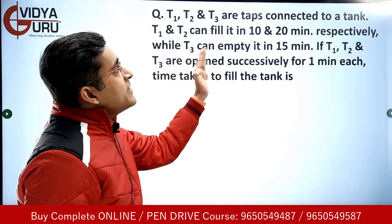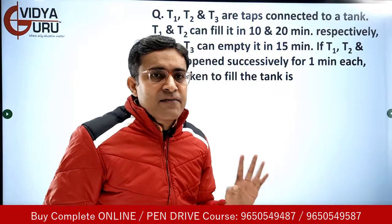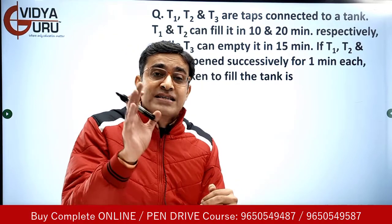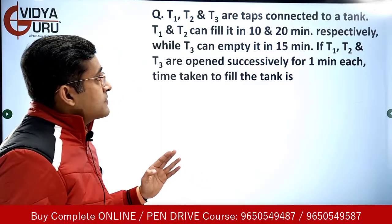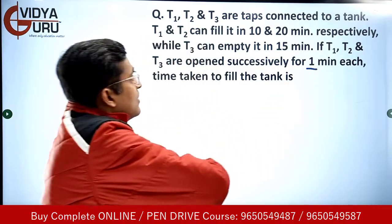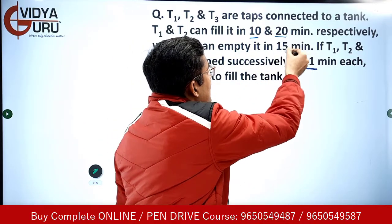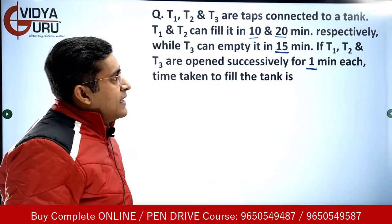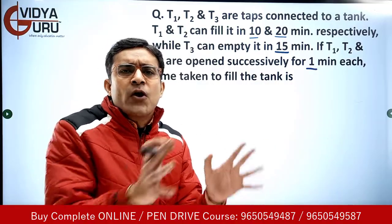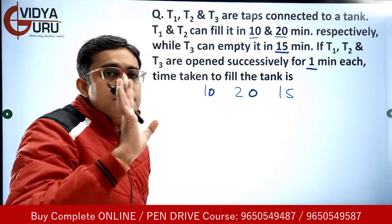The second question says: T1, T2 and T3 are taps connected to a tank. T1 and T2 can fill it in 10 and 20 minutes respectively. T3 can empty the tank in 15 minutes — so T1 and T2 are filling the tank while T3 is emptying it. If T1, T2 and T3 are open successively for one minute each, the time taken to fill the tank is? Again we will do the same thing — first take the LCM.